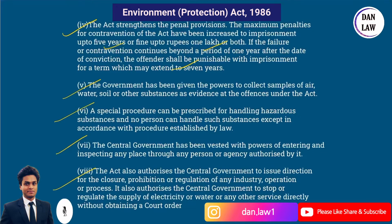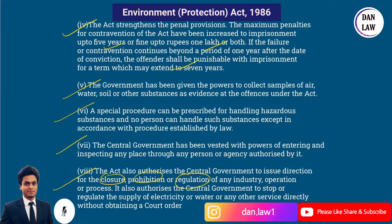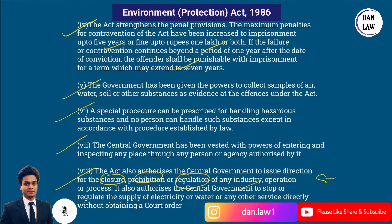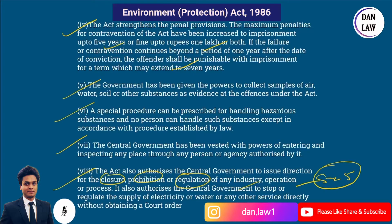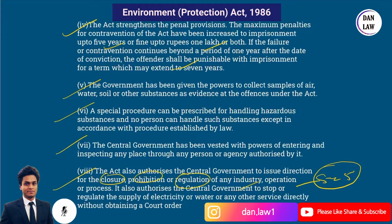The Act also authorizes the central government to issue directions for the closure, prohibition, or regulation of any industry, operation, or process. This power is given to the central government under Section 5 of this Act. It also authorizes the central government to stop or regulate the supply of electricity or water or any other service directly, without obtaining a court order.